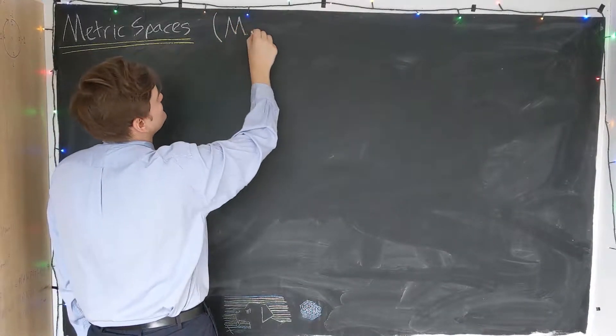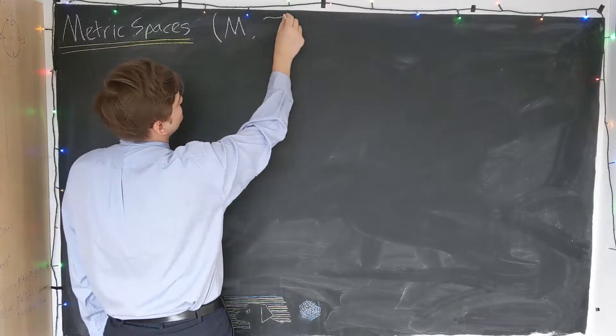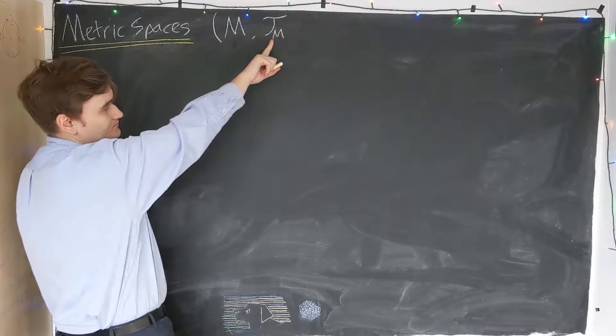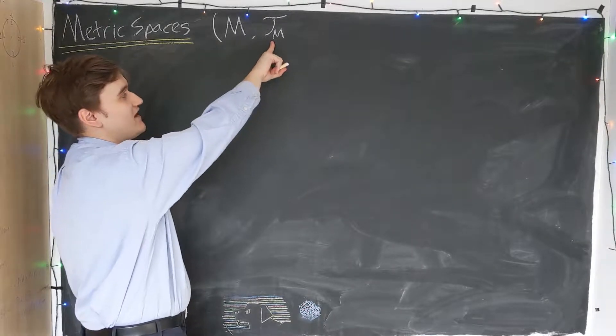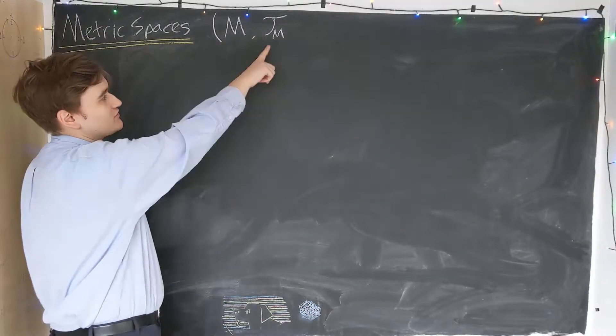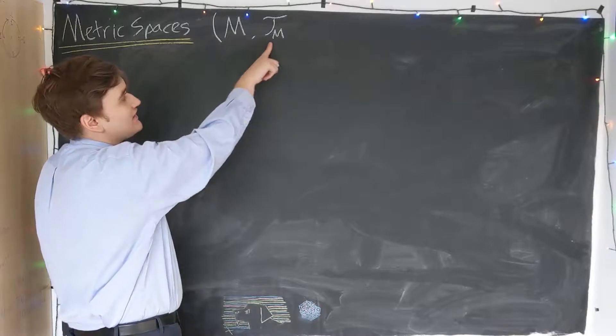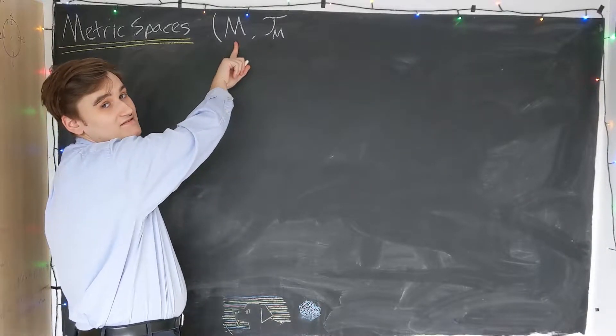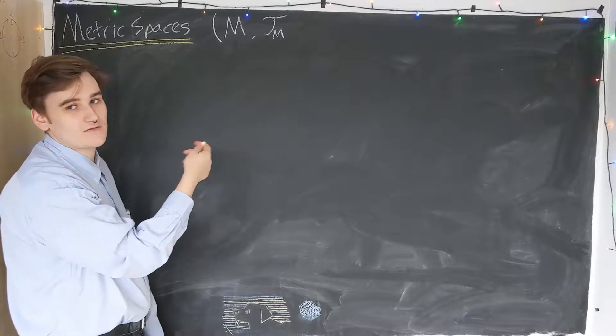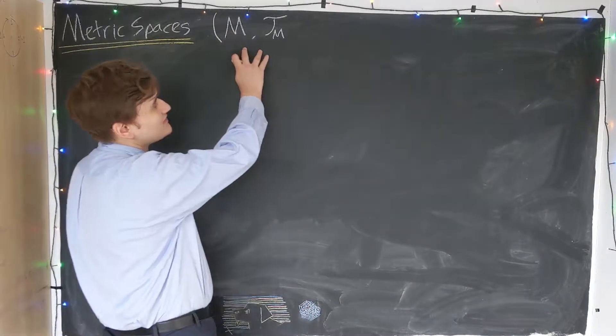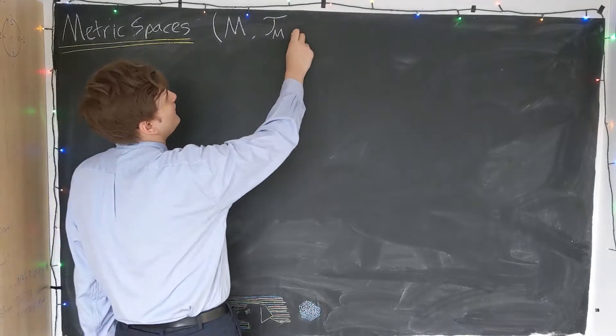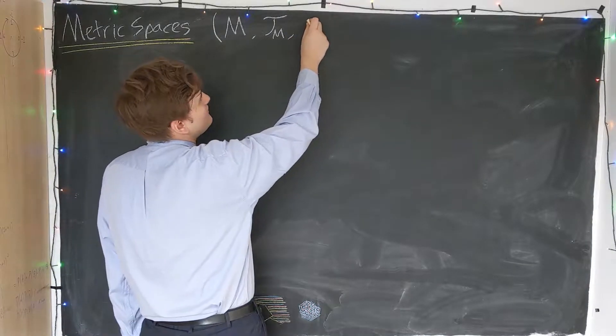So what do we mean by a metric space? A metric space is a topological space, which is a set with some particular topology that we've defined on that set, which we saw in the last video is just a collection of subsets of the set that satisfies the three axioms. Additionally, as well as the topological space, we have to define what we mean by the metric.